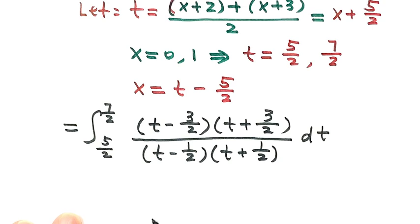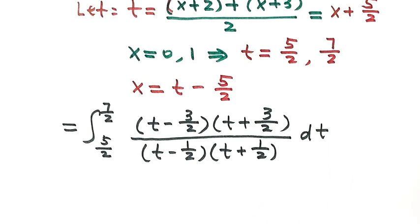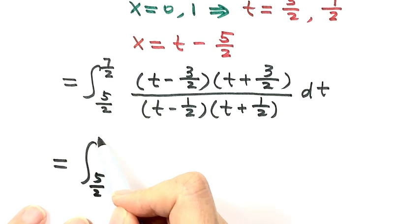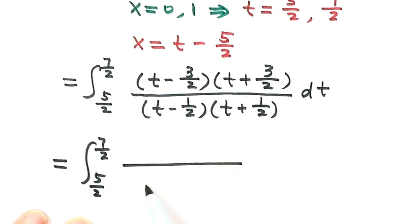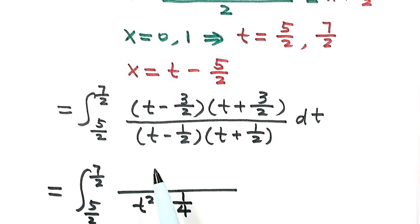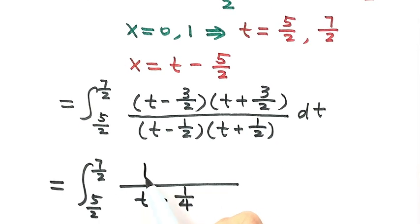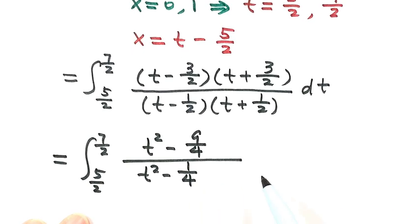Notice that both the numerator and denominator follow the pattern (a - b)(a + b) = a² - b². On the bottom, (t - 1/2)(t + 1/2) = t² - 1/4. On the top, (t - 3/2)(t + 3/2) = t² - 9/4. So the integral becomes the integral from 5/2 to 7/2 of (t² - 9/4) divided by (t² - 1/4), dt.